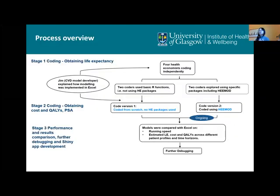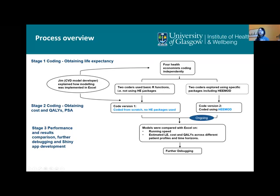Here is the process. Four of us coded independently. We modularized the coding into two tasks. The first task was to obtain life expectancy. Before coding, Jim — one of the CVD model developers — explained how the model was implemented in Excel. Then we coded independently to get life expectancy and met up to compare our coding. We found two coders coded from scratch, not using any health economics packages, and the other two explored using packages including heemod. The two styles then became two teams.